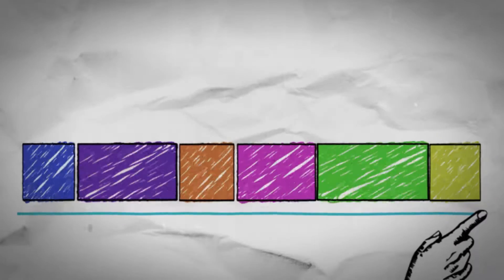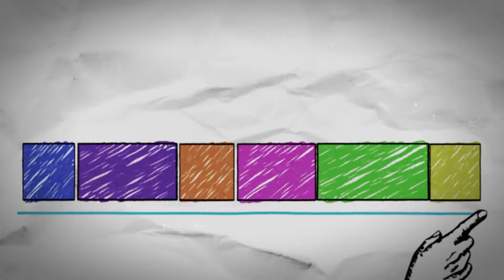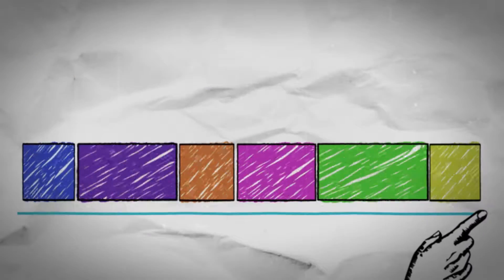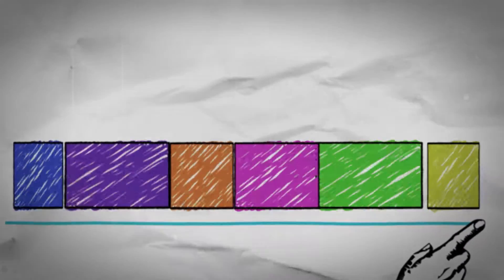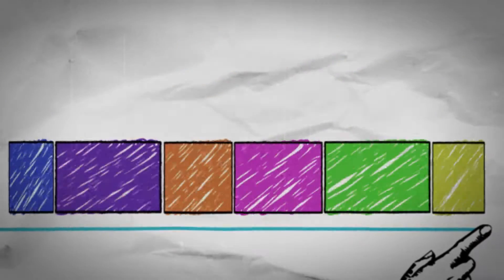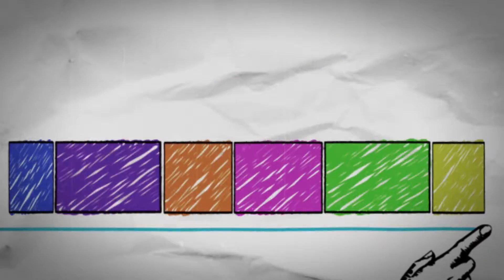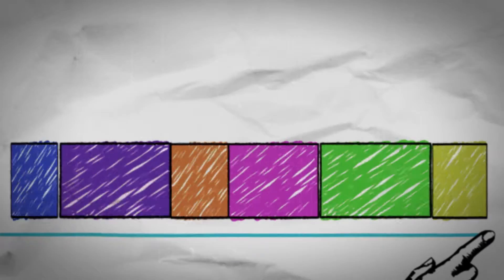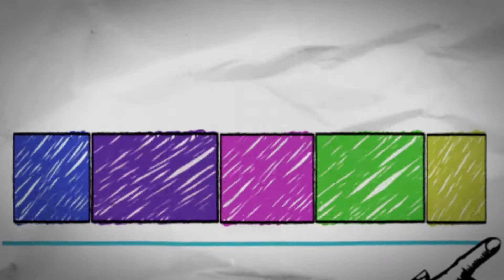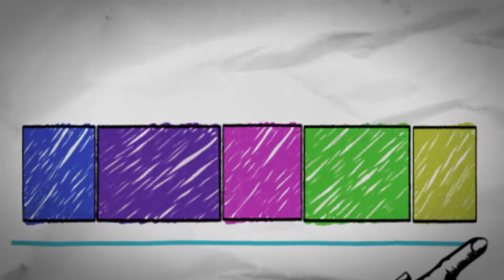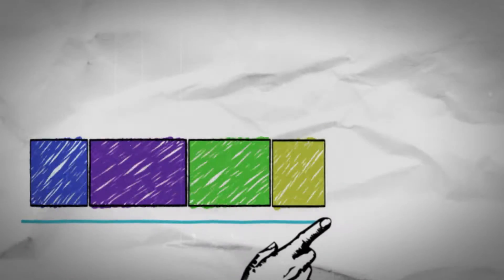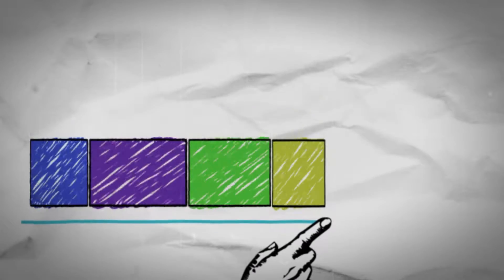Once we're happy with the duration of the story we can export it. To make the story even shorter we move the slider to a new duration and export it again. As the story duration is reduced we start to lose the lower priority shots. As we continue to reduce the duration we continue to lose shots until eventually we end up with the shortest possible version of the story.